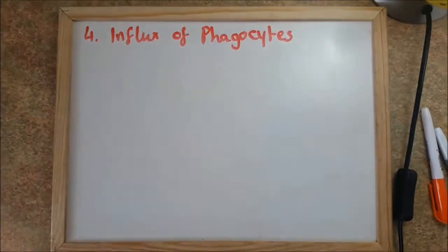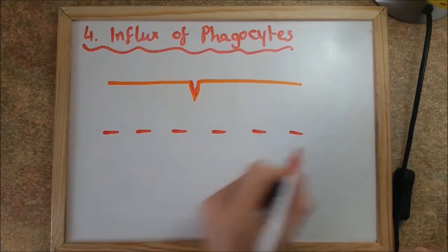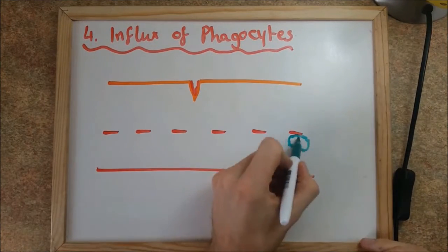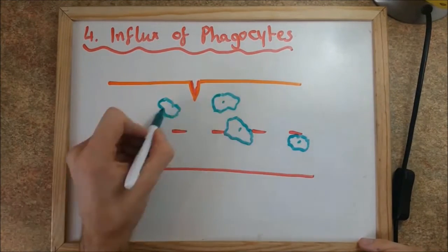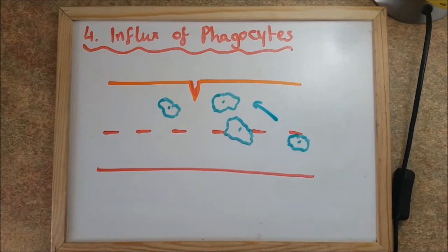Finally, an influx of phagocytes through the vessels occurs. They first aggregate along the vessel walls in a process known as margination before they squeeze through via diapedesis.